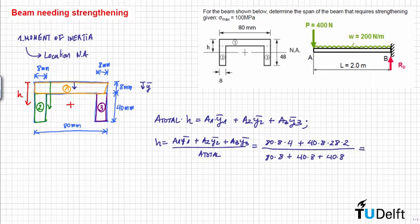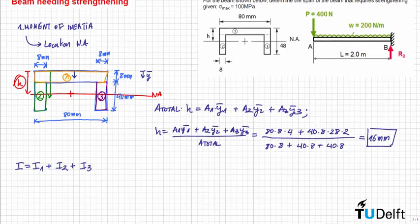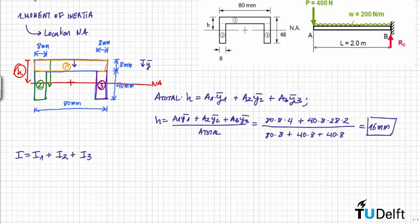This gives h equal to 16 millimeters. So we now know the neutral axis is located at 16 mm from the reference. We can now calculate the moment of inertia of the whole section, which is I1 + I2 + I3, using the parallel axis theorem for each part.